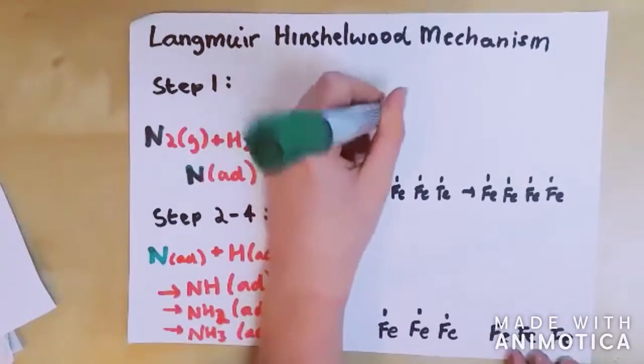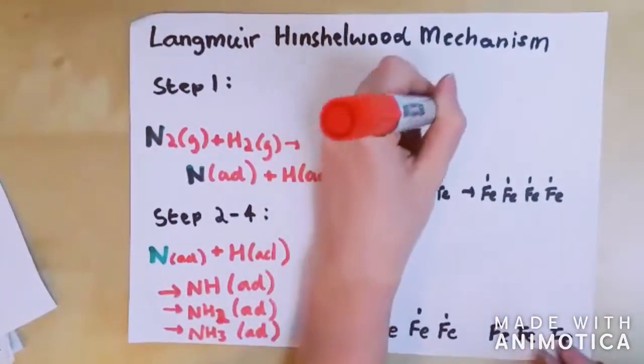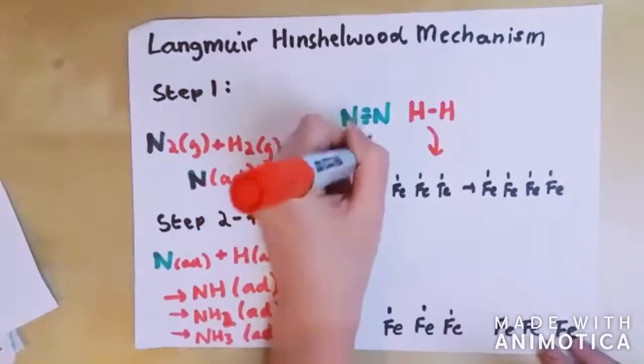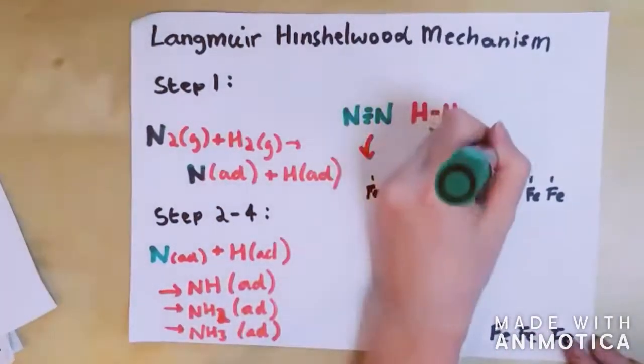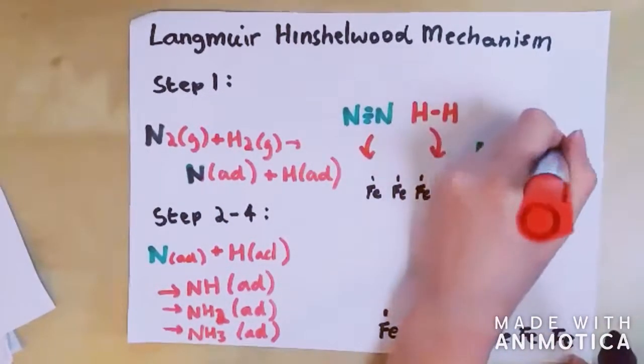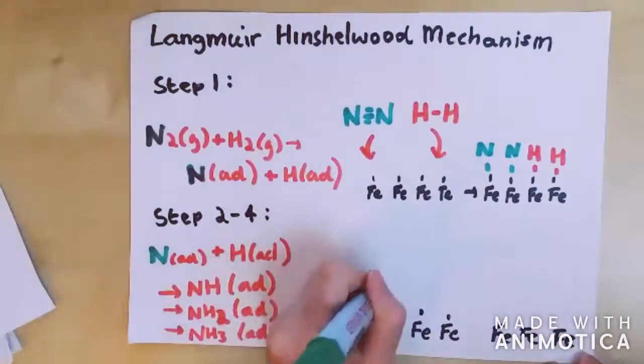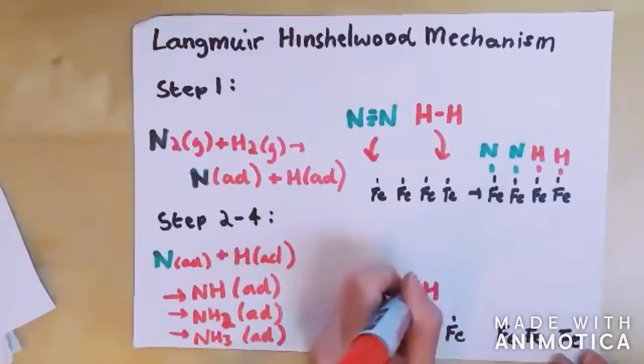Ammonia synthesis follows what chemists call a Langmuir-Hinshelwood mechanism. The first step involves the dissociative absorption of nitrogen and hydrogen onto the catalyst surface. Nitrogen has a strong bond, so this requires a lot of energy to break.